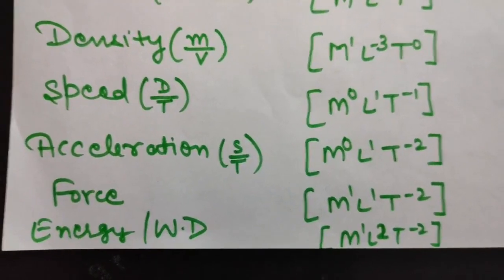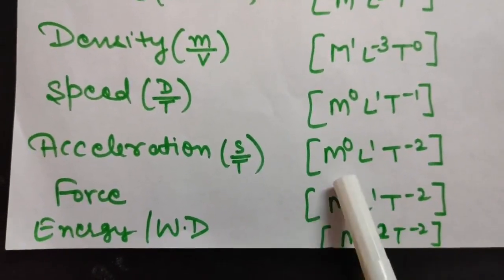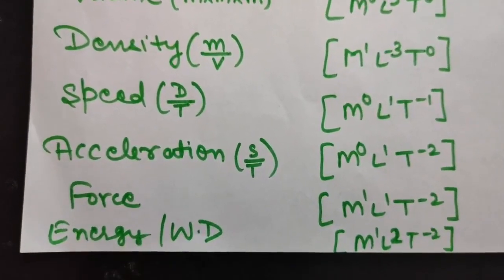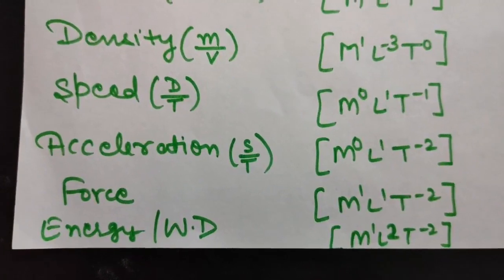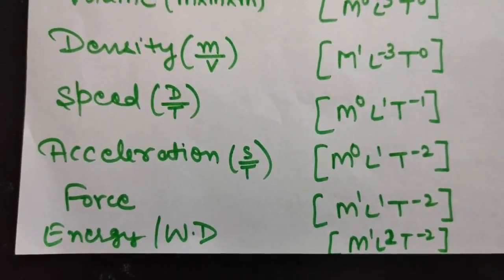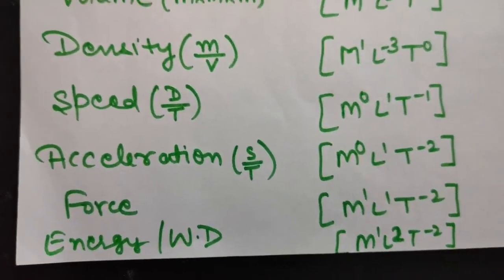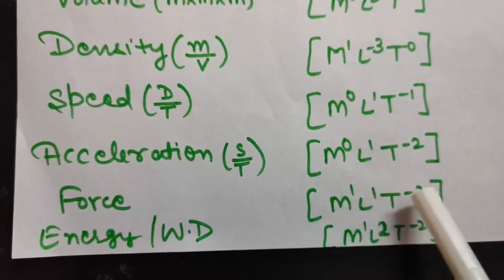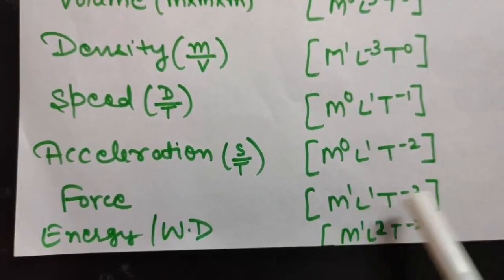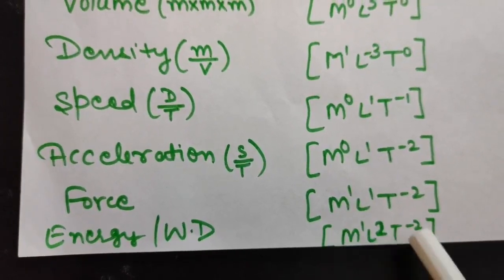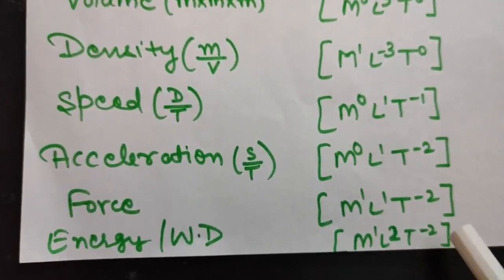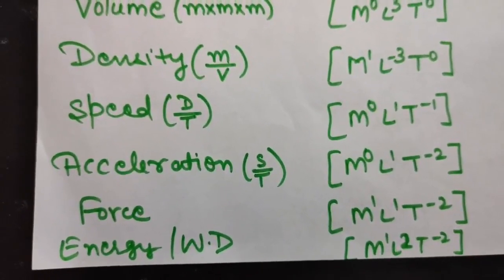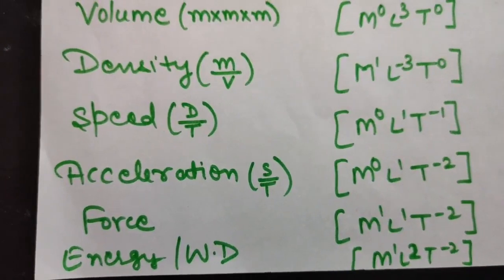For force — force is mass into acceleration. So M¹ multiplied by L¹ T⁻² gives M¹ L¹ T⁻². For energy — work done and energy are the same, because work done is stored as energy. The formula of work done is force into displacement. Force is M¹ L¹ T⁻² and distance adds another L, so L becomes squared. Therefore the dimensional formula of energy or work done is M¹ L² T⁻². These are some general dimensional formulas you will need in all the chapters.